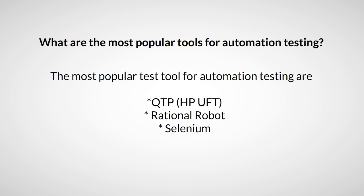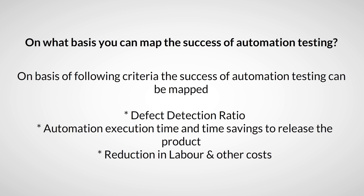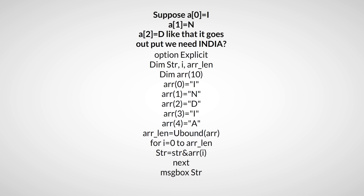What are the scripting standards while performing automation testing? While writing scripts for automation you have to consider the following: uniform naming convention, three lines of comments for every ten lines of code, adequate indentation, robust error handling and recovery scenarios, and use of frameworks whenever possible.